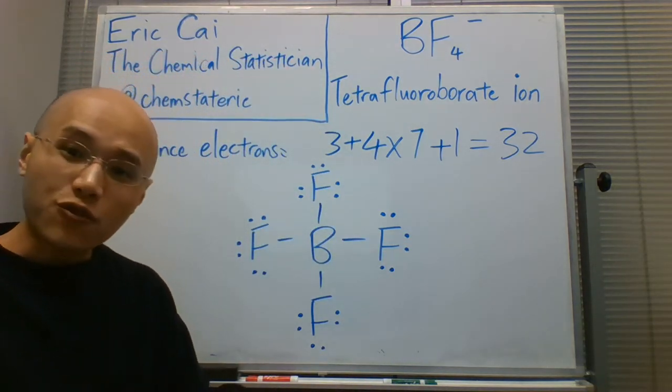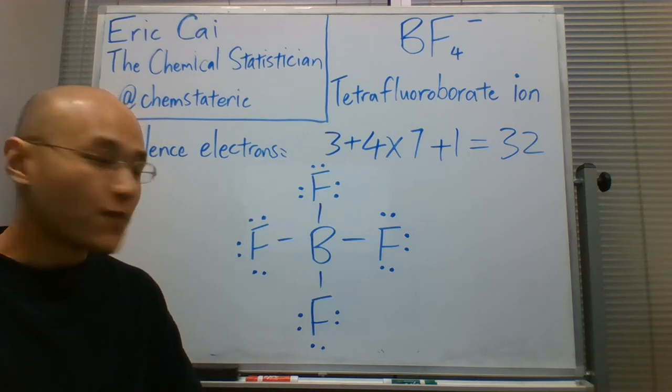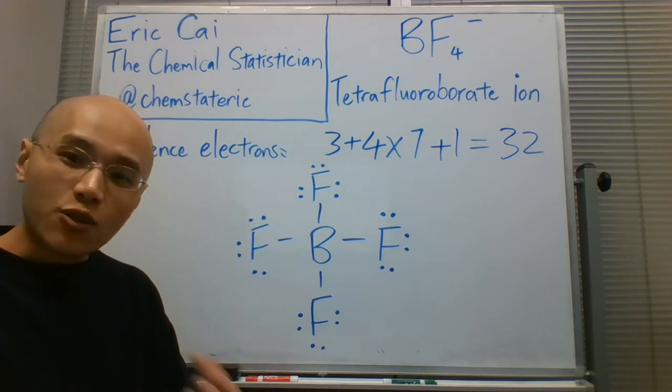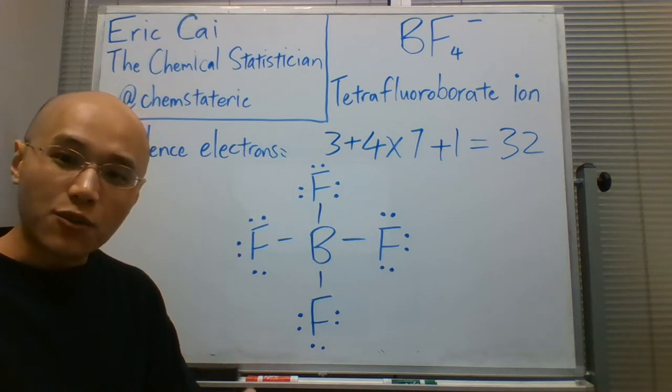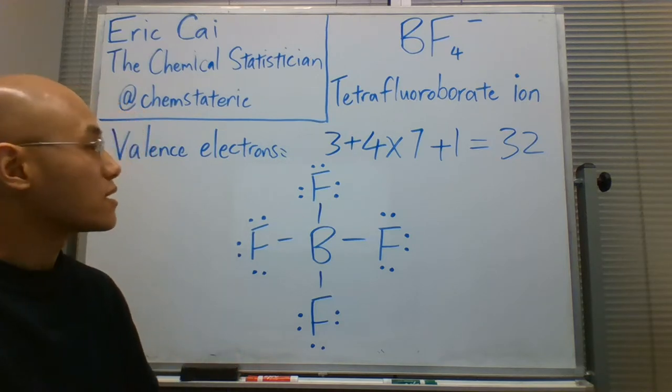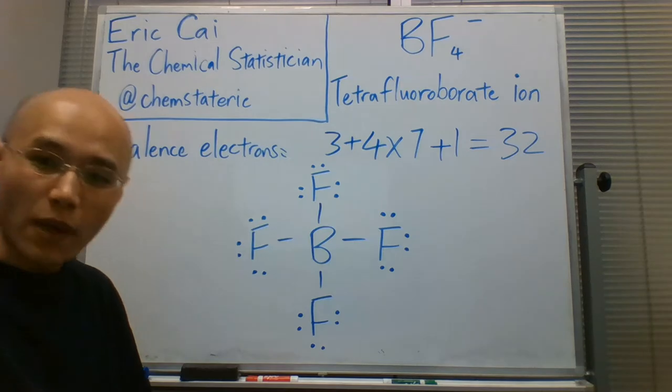So we've distributed all 32 electrons, but we need to show the charge of minus one to this Lewis structure, because this is a polyatomic ion.